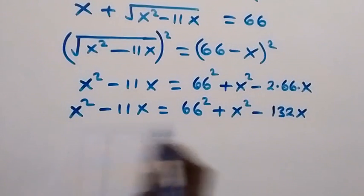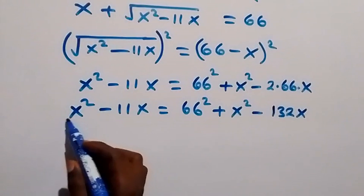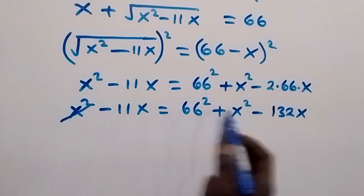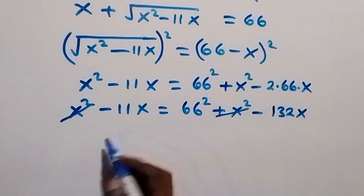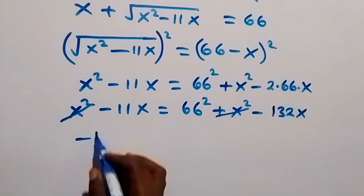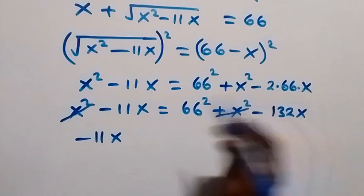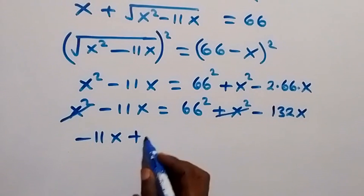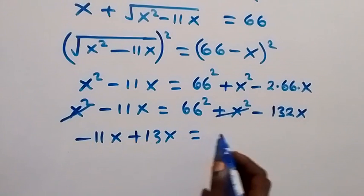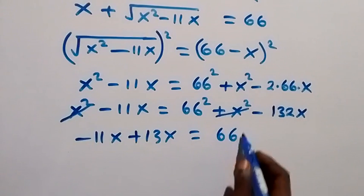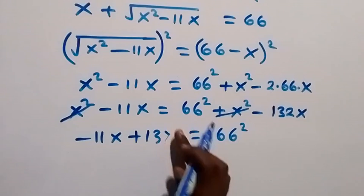Since x² appears on both sides, subtracting x² from both sides cancels them out. Then taking the x terms to one side: we have −11x, and −132x crosses over to become +132x, which equals 66².